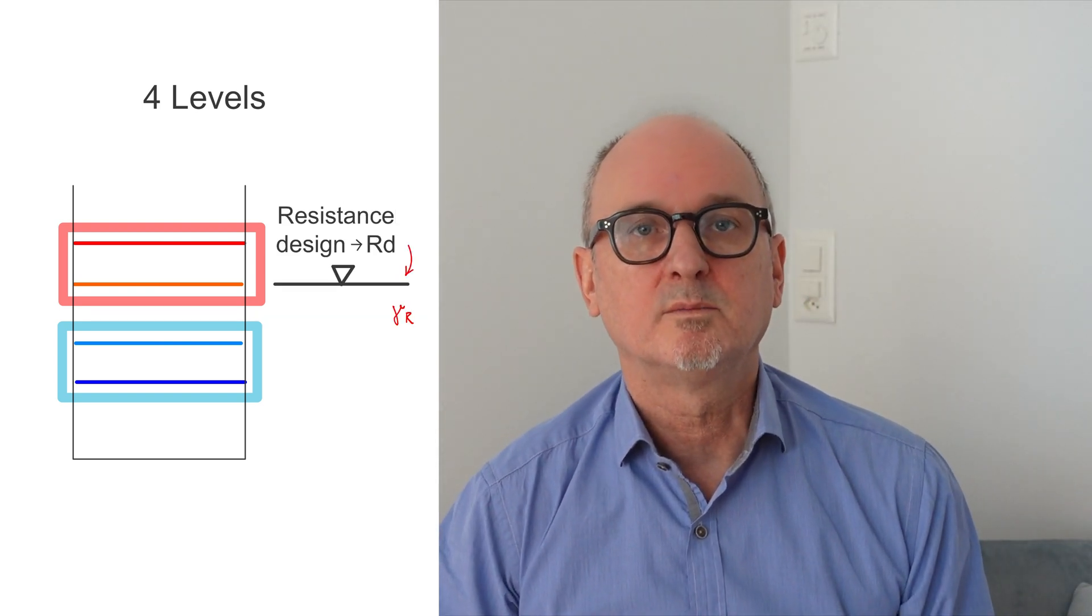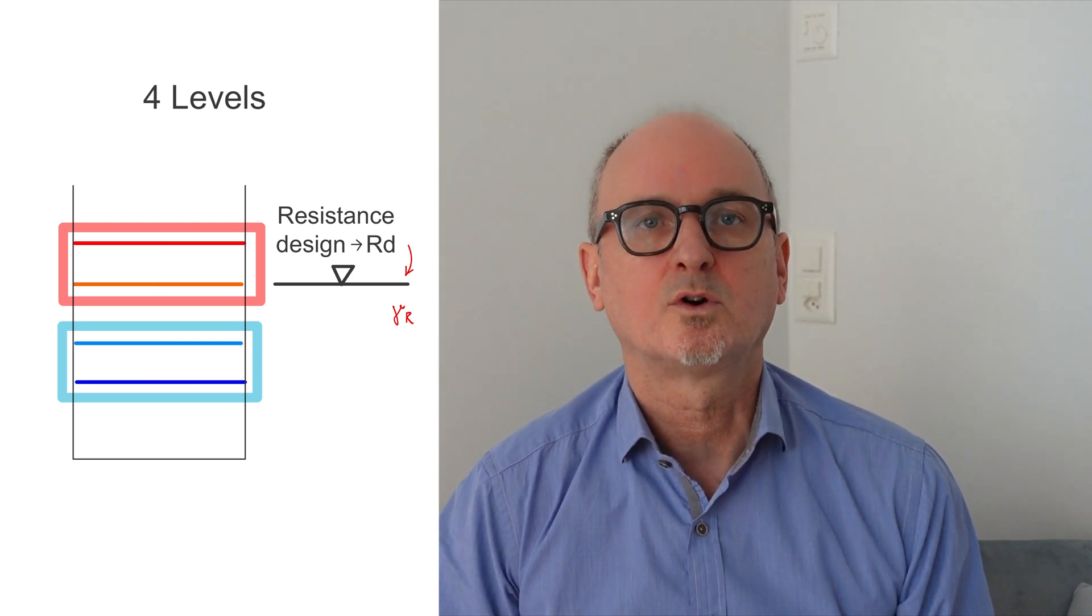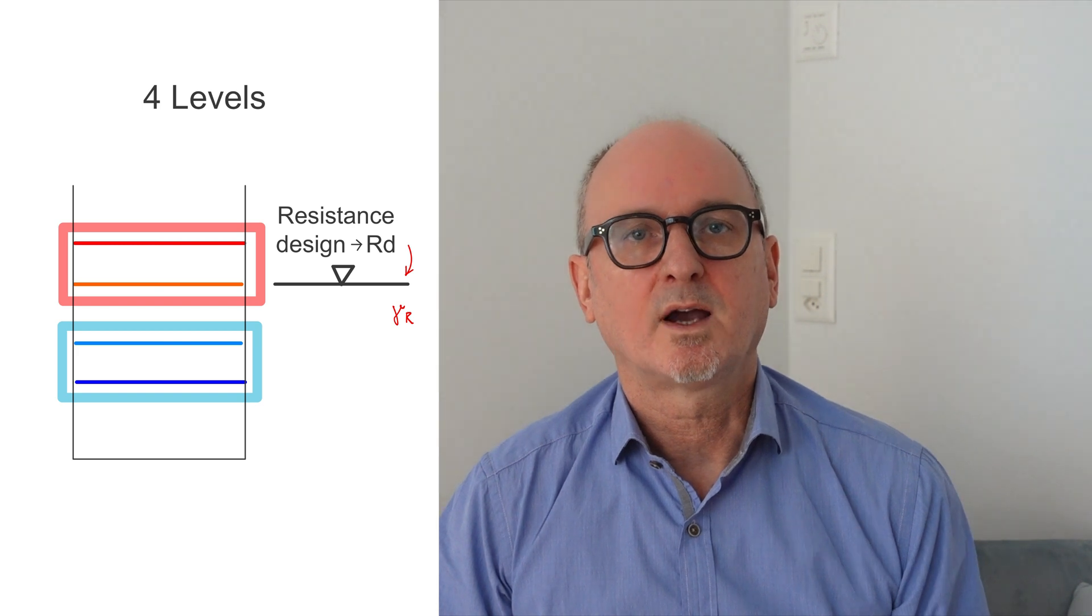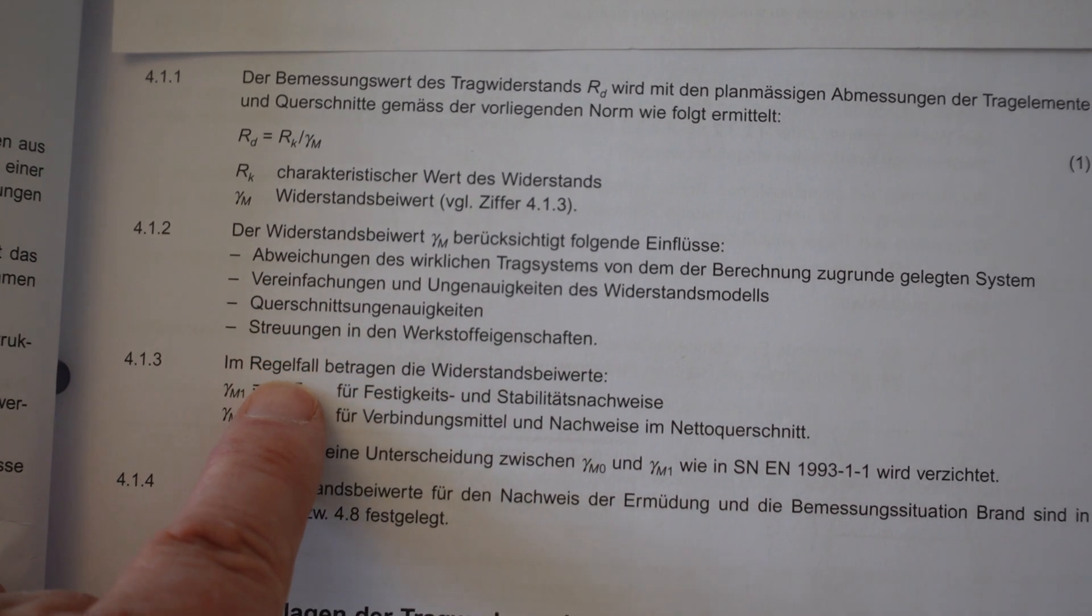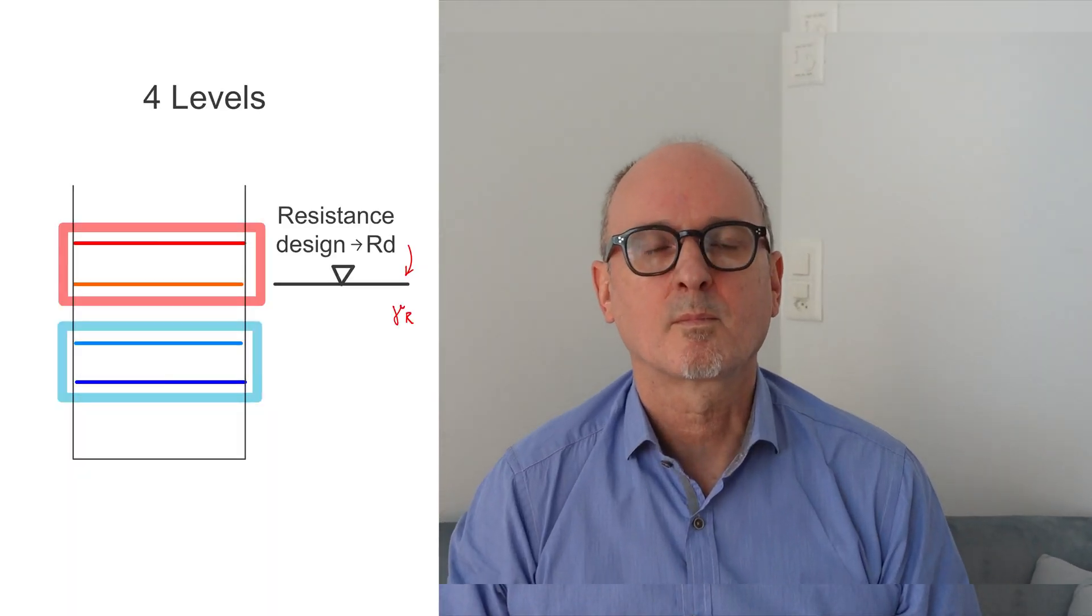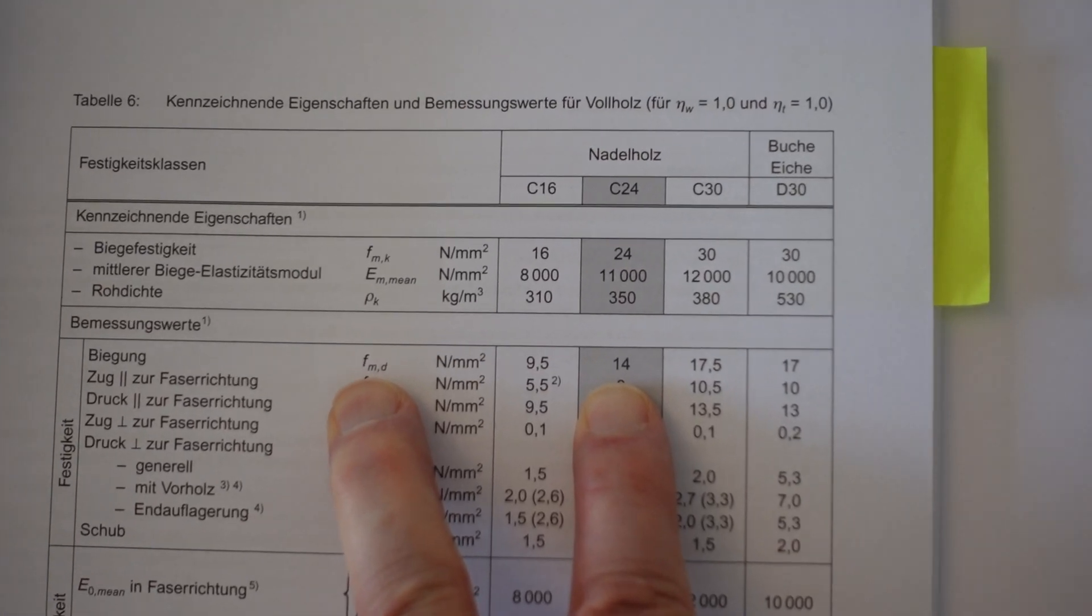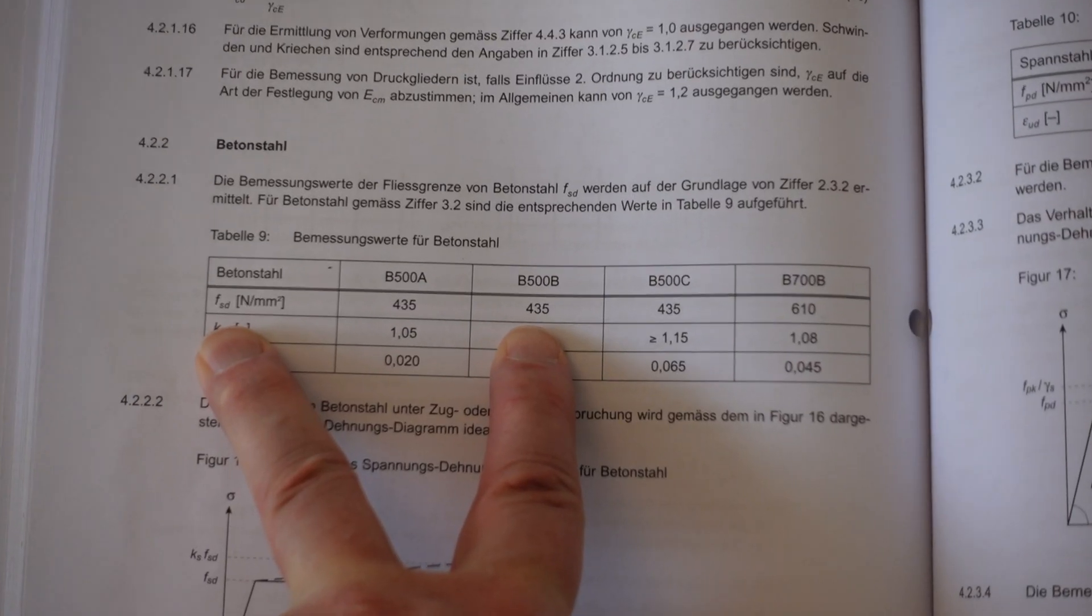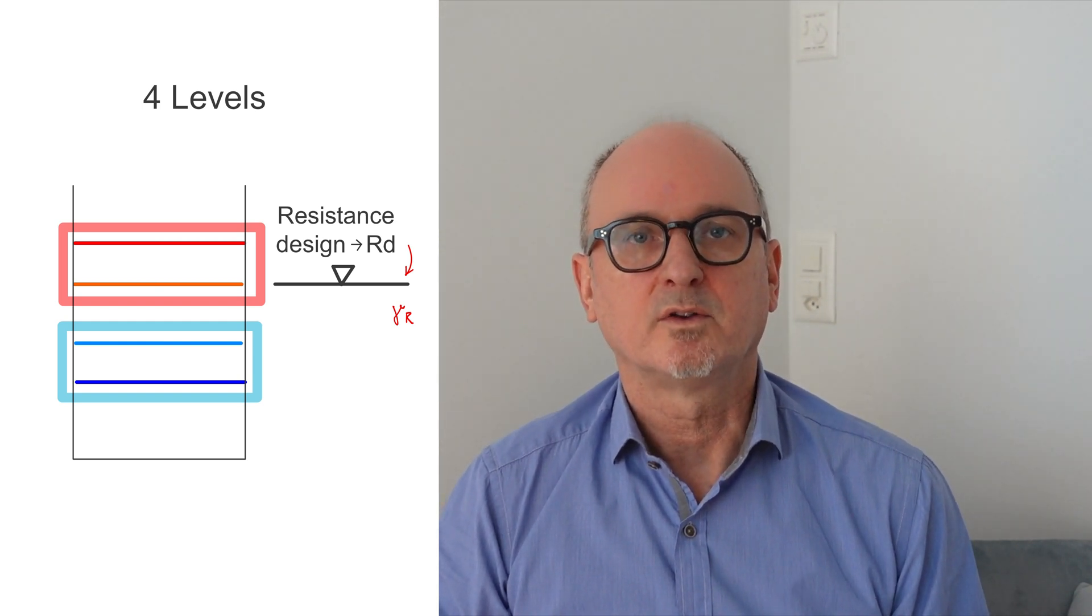And that's why we lowered the ultimate level down to the design level of resistance with another security factor called resistance factor. The resistance factors mainly depend on the building material and can also be taken from the codes, like for example from the Swiss codes for steel constructions. In some codes there is given a value of resistance on design level directly, as for example in the codes for timber and concrete steel. In these cases you directly act on the design level of resistance and you won't have to worry about the resistance factors because it's already built in.